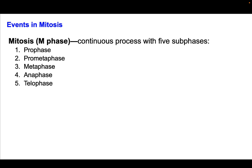Now we'll hone in on how DNA is separated in the process of mitosis. It's a continuous process with five sub-phases: prophase, prometaphase, metaphase, anaphase, and telophase. We're going to talk about what happens in each of these phases. It can be really helpful to diagram these processes yourself and keep track of what's happening to your chromosomes and to the spindle apparatus in each phase — those are the two key things to follow.